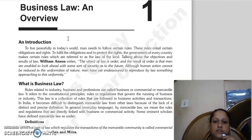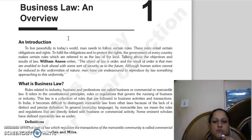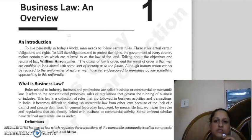The objectives and results of the law — William Anson has written this way: the objective of the law is order, and the result of the law is order.